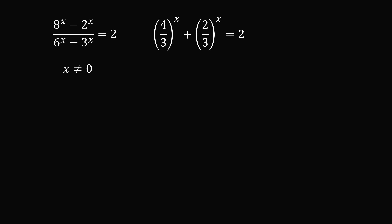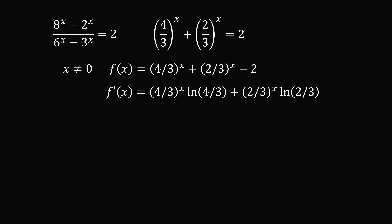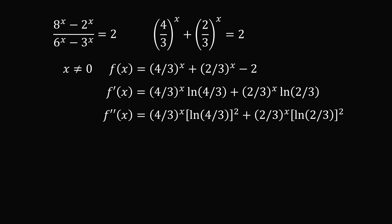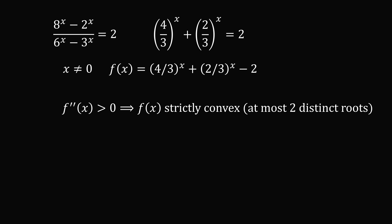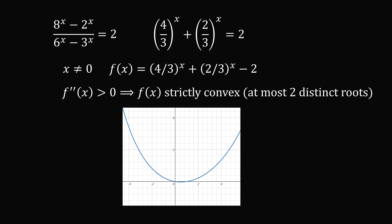Now let's define f of x to be 4 over 3 raised to the power of x plus 2 over 3 raised to the power of x minus 2. We take the first and second derivatives of this function. Notice that 4 over 3 to the power of x is greater than 0, a squared natural log is greater than 0, and 2 over 3 to the power of x multiplied by a squared term is also greater than 0. So f double prime of x is strictly greater than 0, meaning f of x is strictly convex and has at most two distinct roots, as illustrated by the shape of such a curve.